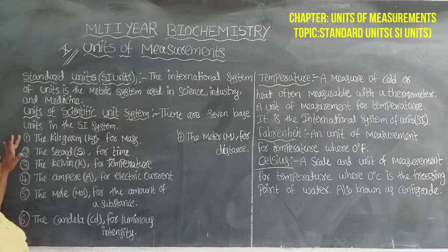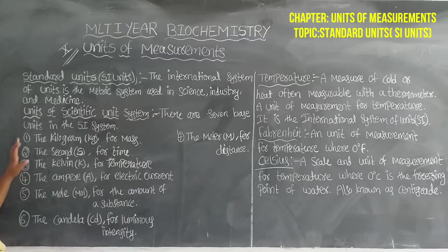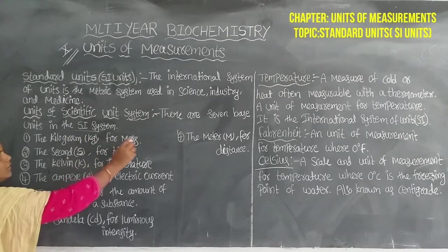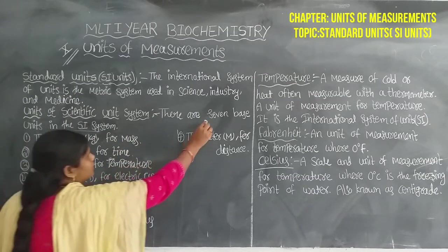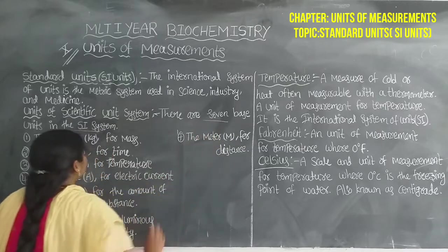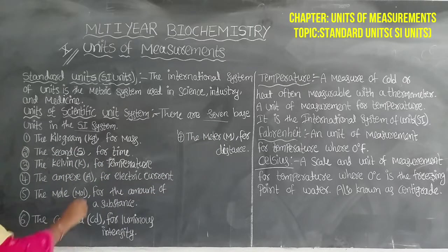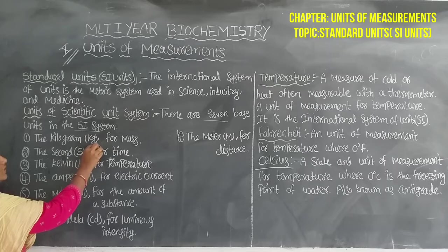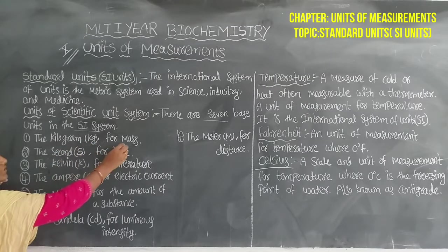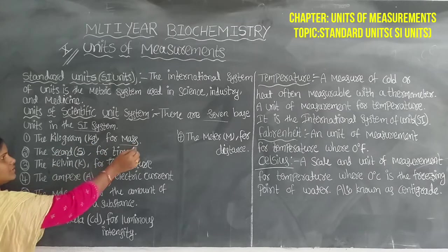There are 7 base units in the SI units. We have 7 SI units total. The first one is the kilogram — abbreviation KG — for mass.